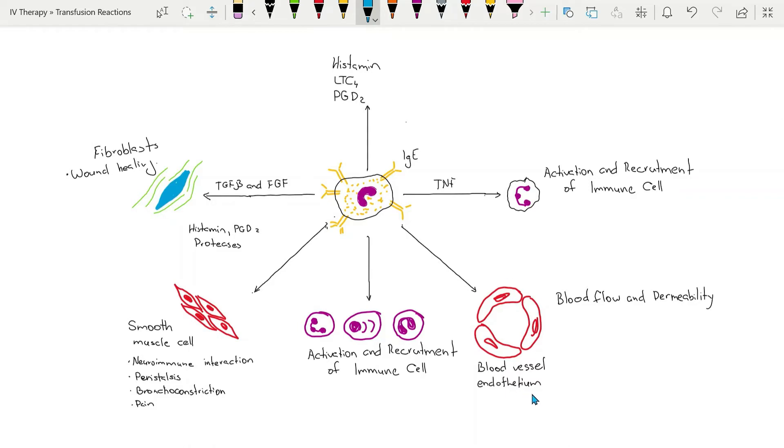The most important effects are on blood vessel endothelium which can be vasodilated, and smooth muscles on the GI tract which lead to increased peristalsis, and bronchoconstriction will occur.